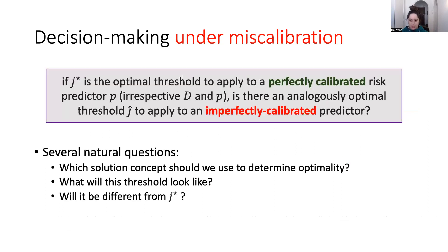Some calibration errors are inevitable, and there is still the question of how these are potentially amplified in the decision-making process. This is the starting point for our work. The question we put forth is: if J* is the optimal threshold to apply to a perfectly calibrated predictor — irrespective of the distribution — is there a similarly optimal threshold J-hat that you should apply if you know you're faced with an imperfectly calibrated predictor? This raises follow-up questions: which solution concept determines optimality in this new context, what does J-hat actually look like, and when is it different from J*?